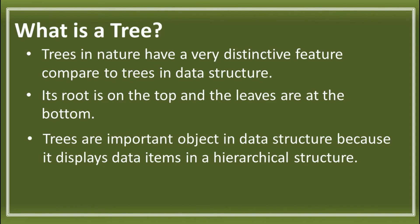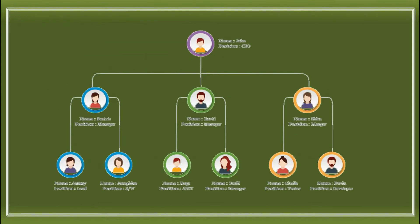The basic example of a TREE is the organizational chart, wherein you can see one president and its subordinates. Its subordinates also have employees. So here, let's identify if what is displayed on the screen is an example of a TREE or not.